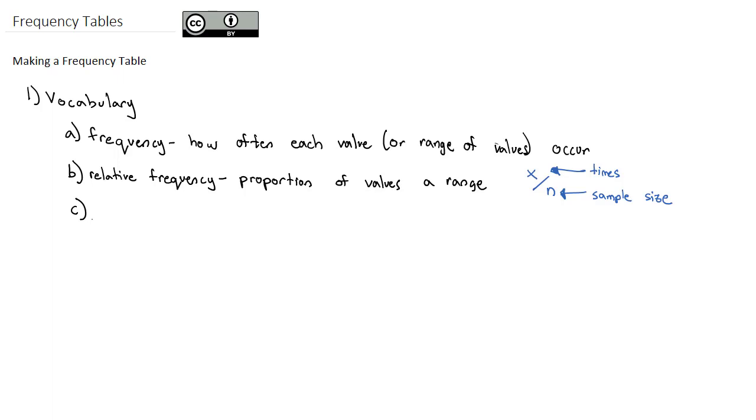After the relative frequency, another thing we're often interested in is what is called the cumulative relative frequency. Cumulative means how many have we seen up to this point. In other words, it is the sum of all the previous relative frequencies.